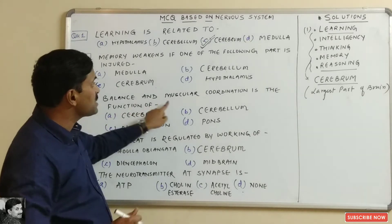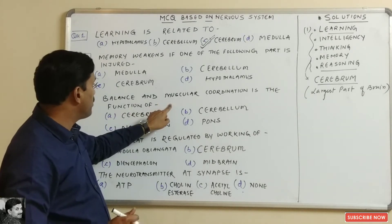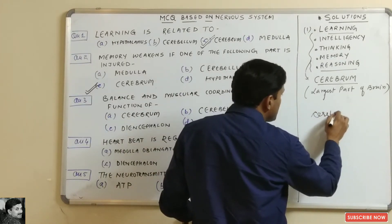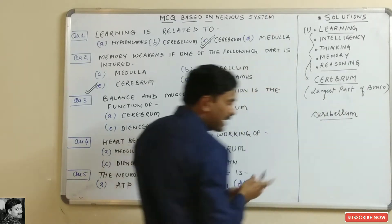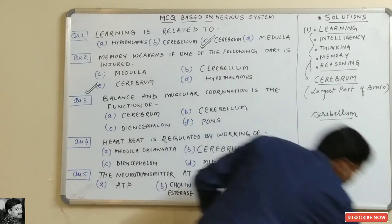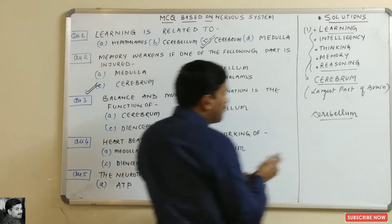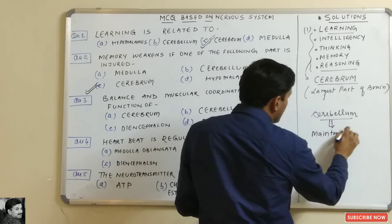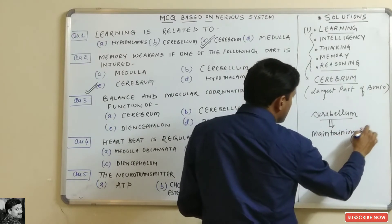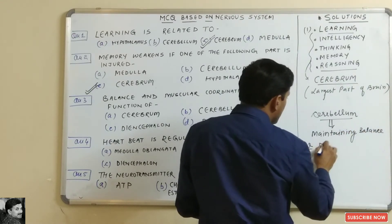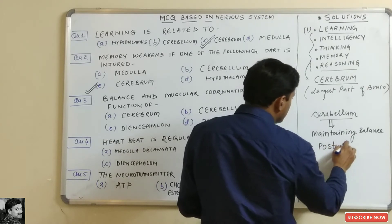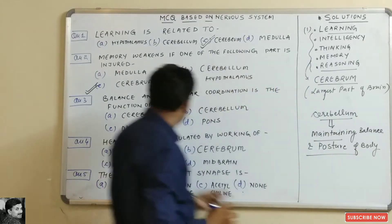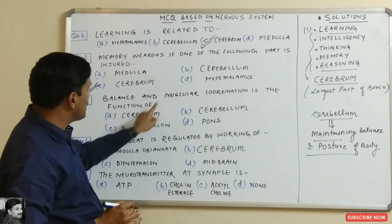Question number three is: balance and muscular coordination is the function of which part? There is a part of the brain known as the cerebellum, and the cerebellum is important for maintaining balance and posture of the body.